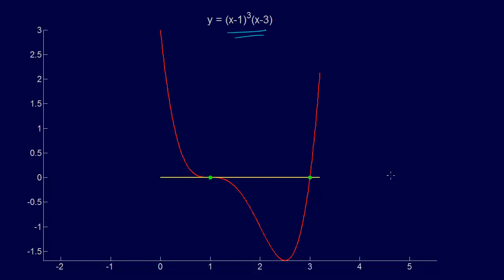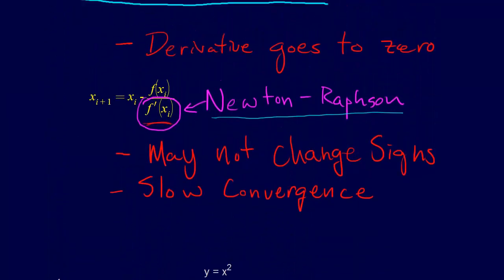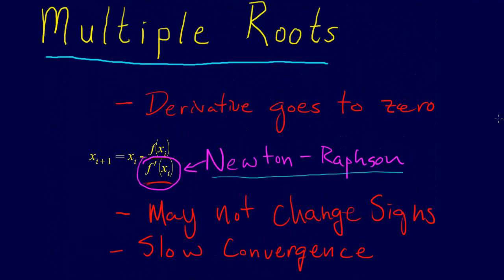So the real question then that we come up with is what approaches can we use so that we can actually find these roots and not run into the problems that we talked about here, of having a derivative that goes to zero, slow convergence, and no sign changes.